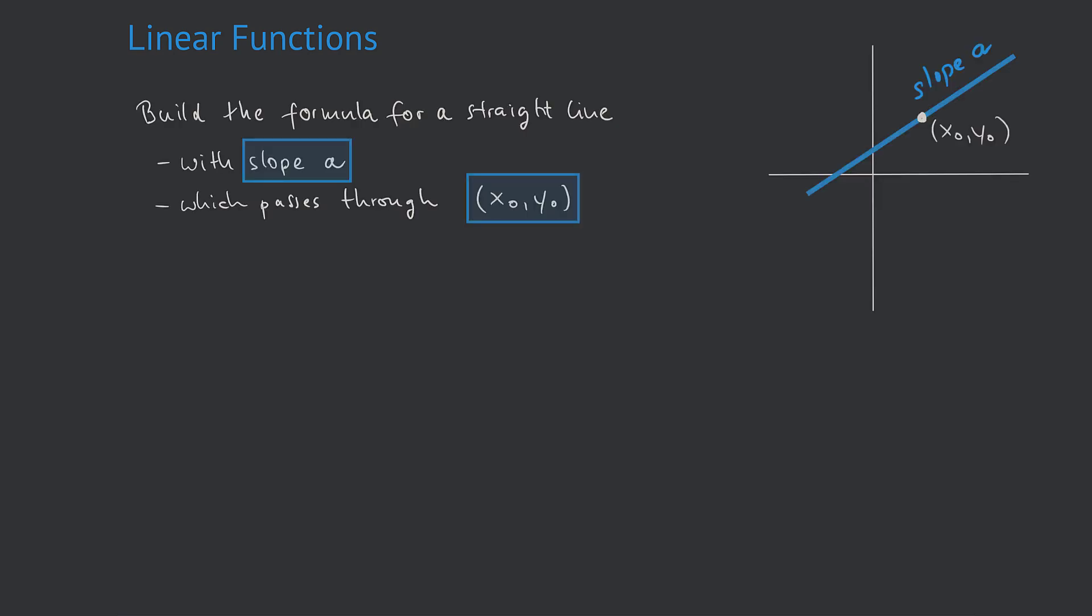In order to construct the formula, we start with a general formula, which is y equals ax plus b. If we find the right a and the right b, we are done. However, a is already given, so we don't have to do anything to find a. We just use that a.